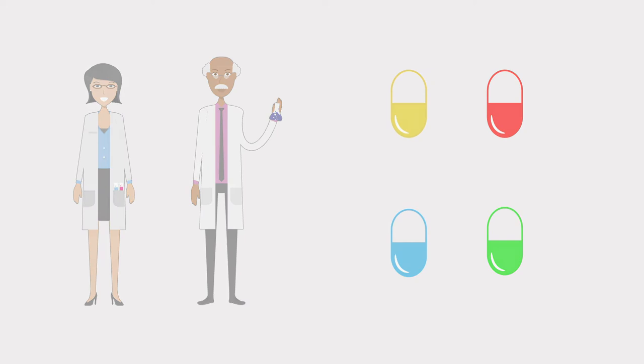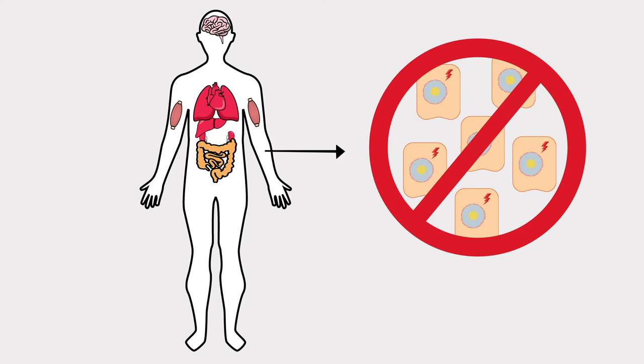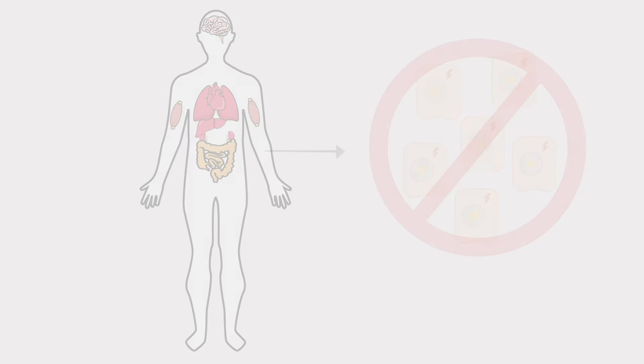In any experiment involving senescent cells, we have to start by creating them in a laboratory setting. It isn't realistic to isolate lots of senescent cells from human tissue, so we have to start with a good model that closely approximates actual senescent cells.